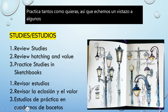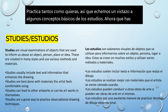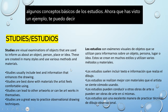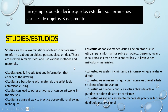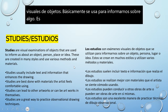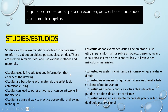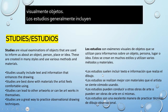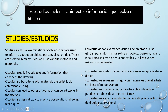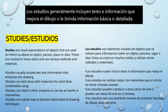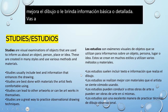Now that you've seen an example, studies are visual examinations of objects — basically used to inform us about something. It's like studying for a test, but you're visually studying objects. Studies usually include text and information that enhances the drawing or gives you basic or detailed information. You're going to be using pencil, Sharpie, and watercolor, so you can practice with any of these materials.